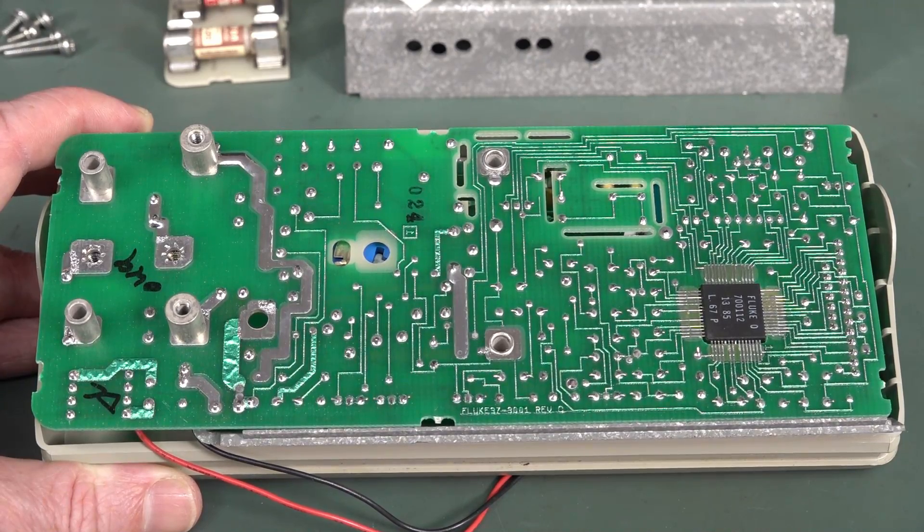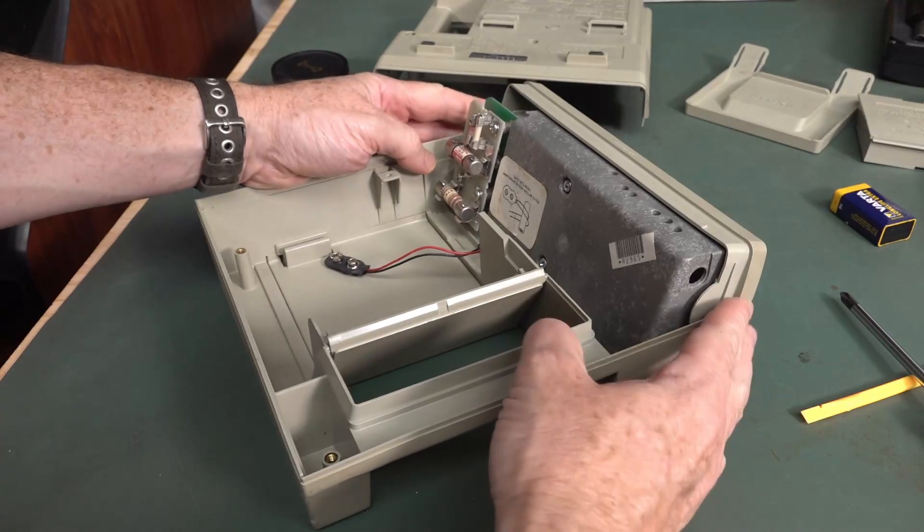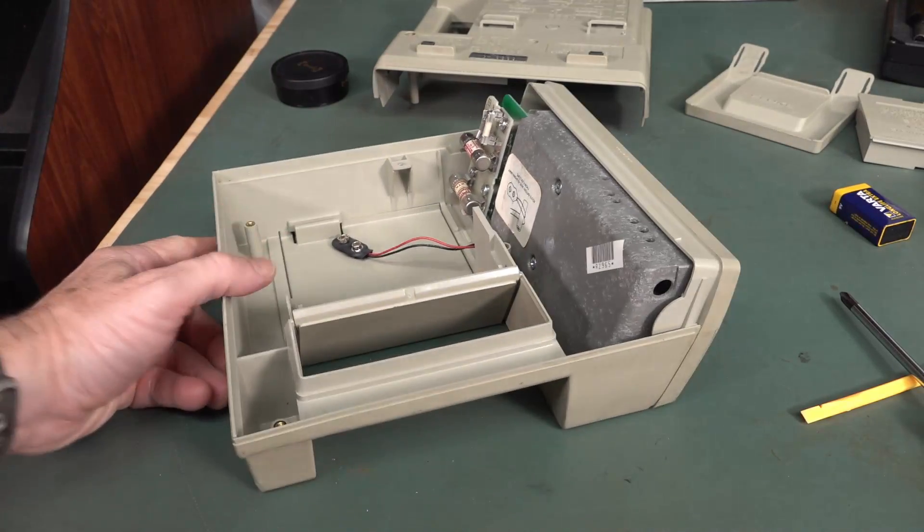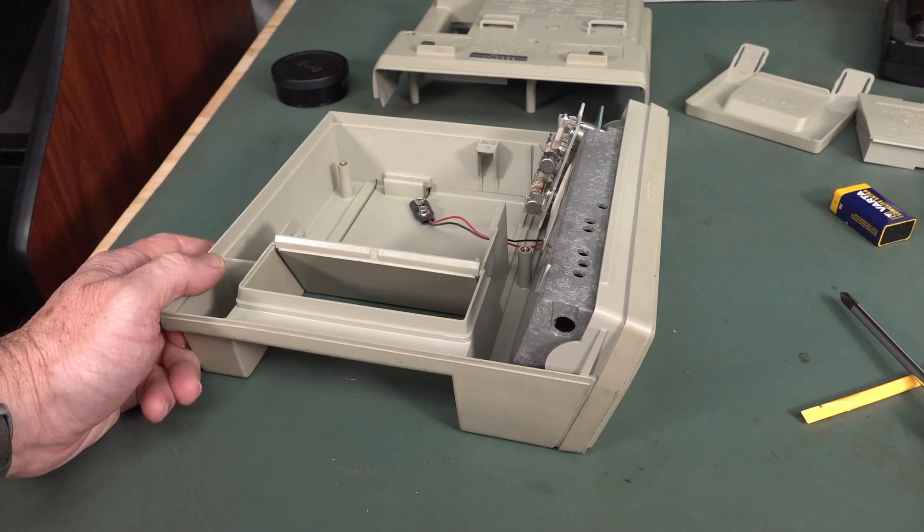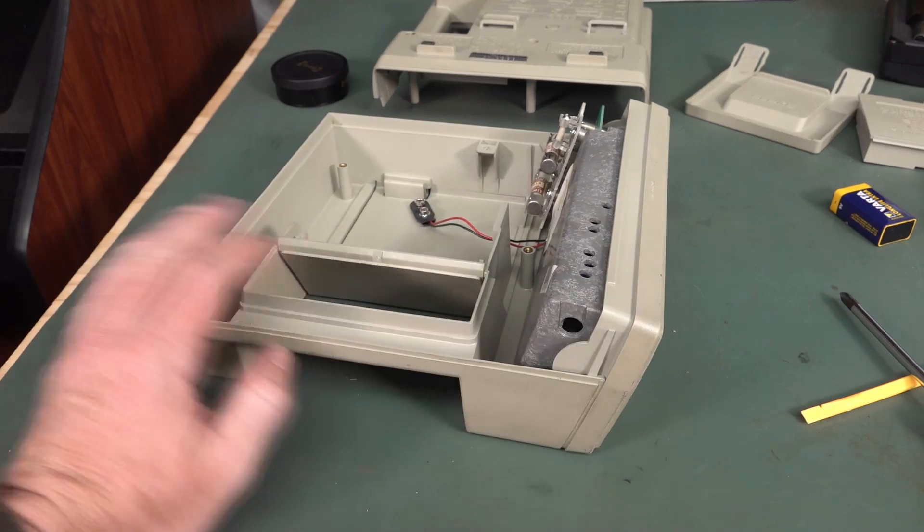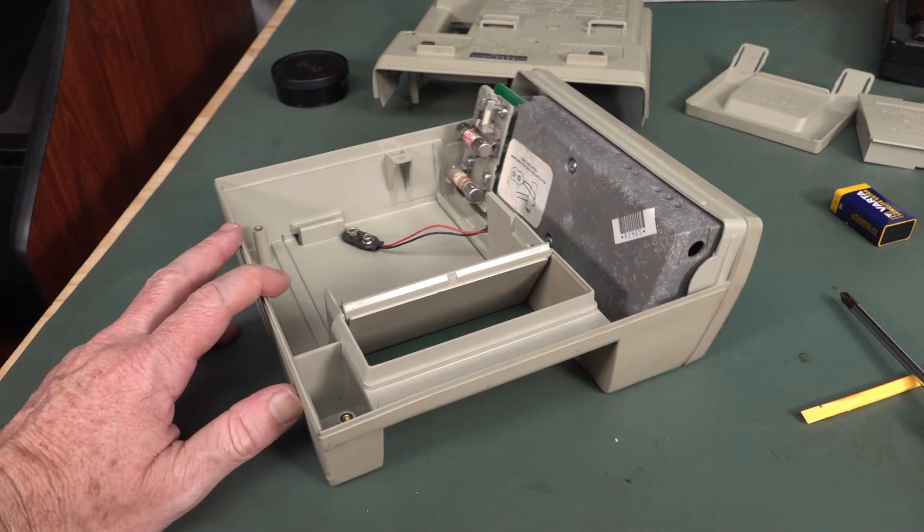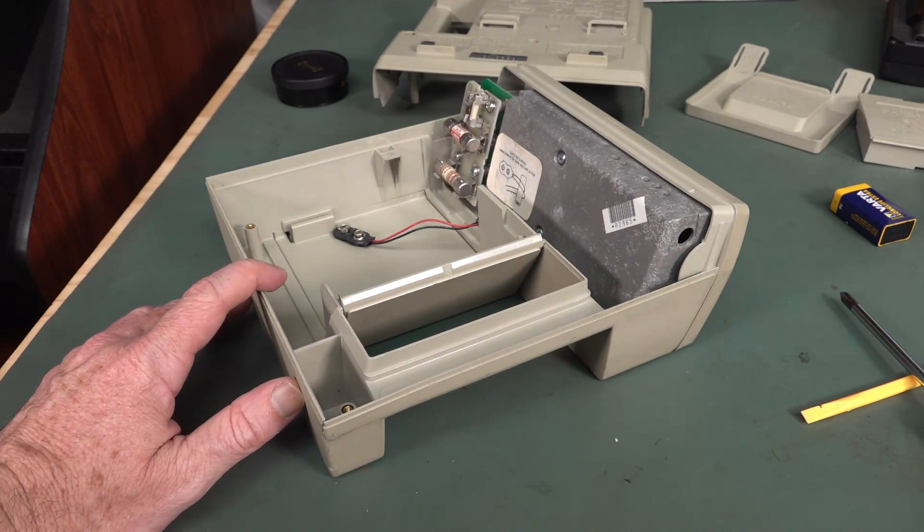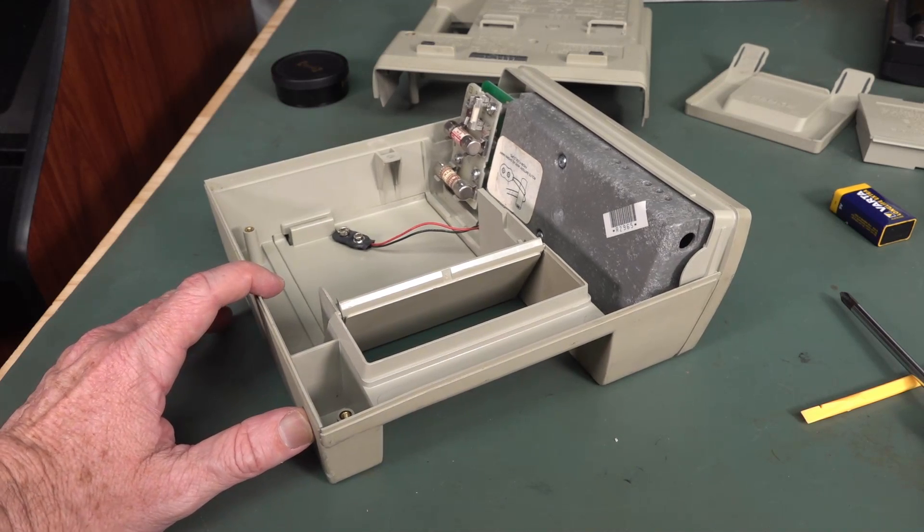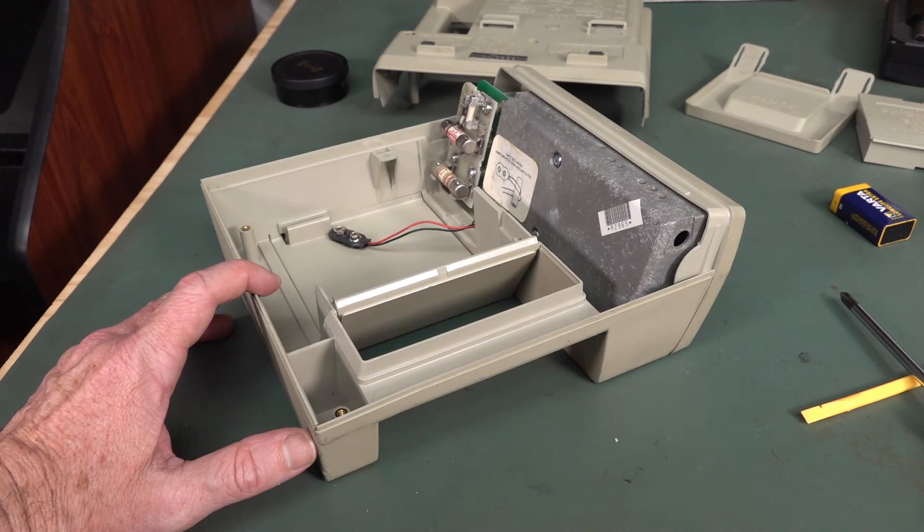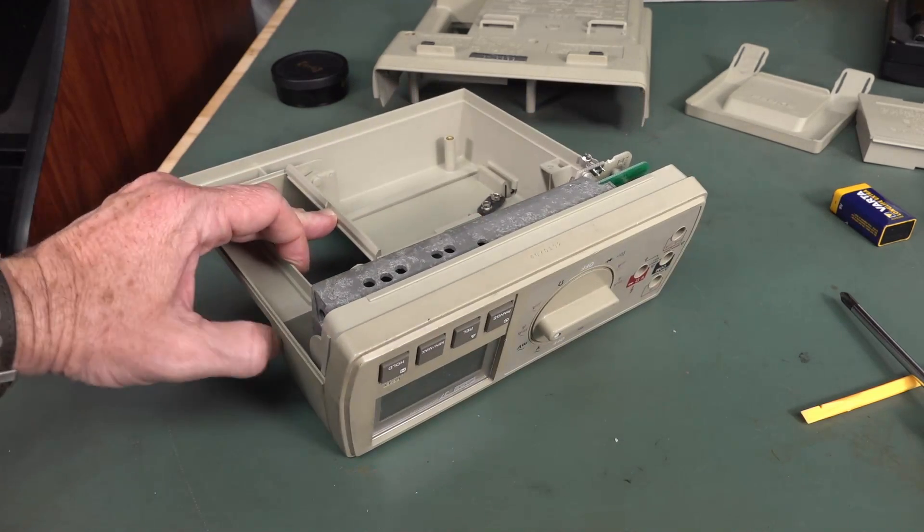But that was typical of Fluke back in the day. But they actually engineered the circuits well though. And this case design, well, it's really quite nice. I can see why you come up the concept of a sloping front multimeter like that. It has its advantages. But why? I don't believe, please leave it in the comments down below if I'm wrong. But I don't believe anyone else has done such a form factor. The Fluke 37 was it. So yeah, I just think it's very cool.